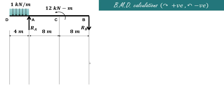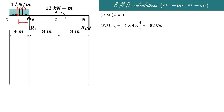Now we draw the bending moment diagram. The bending moment at the free end, point D, is 0. At point A, considering all forces on the left hand side: the UDL converts to a point load of 1 into 4 acting at 2 meters from D, producing an anti-clockwise moment. So bending moment at A equals minus 1 into 4 into 2 equals minus 8 kilonewton meters.